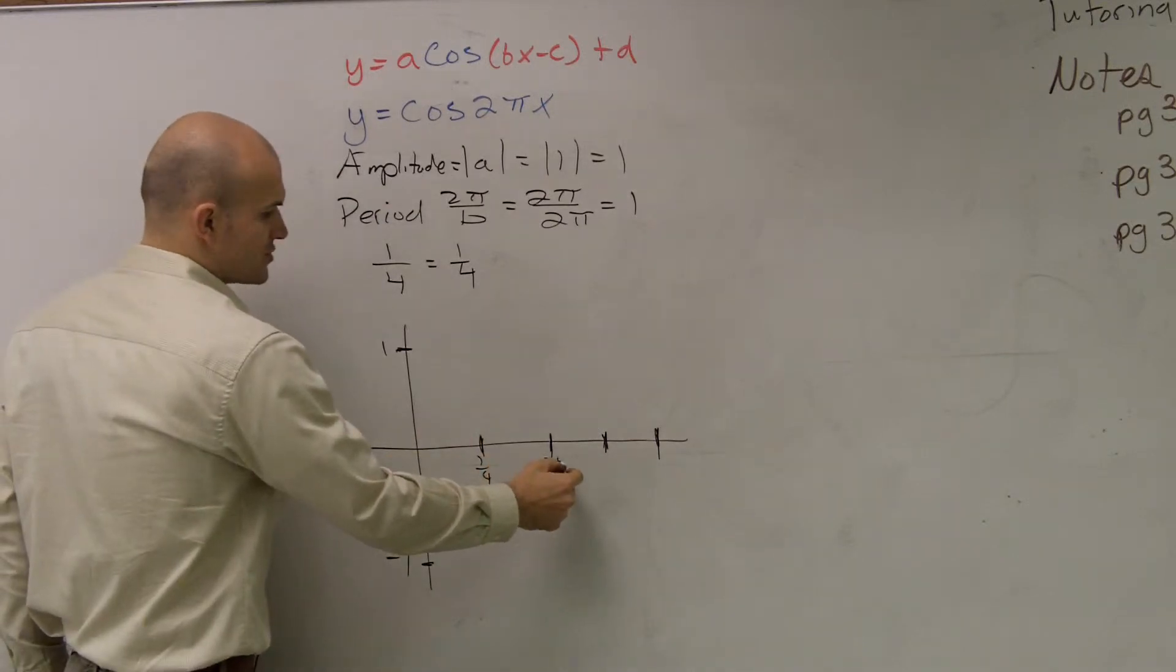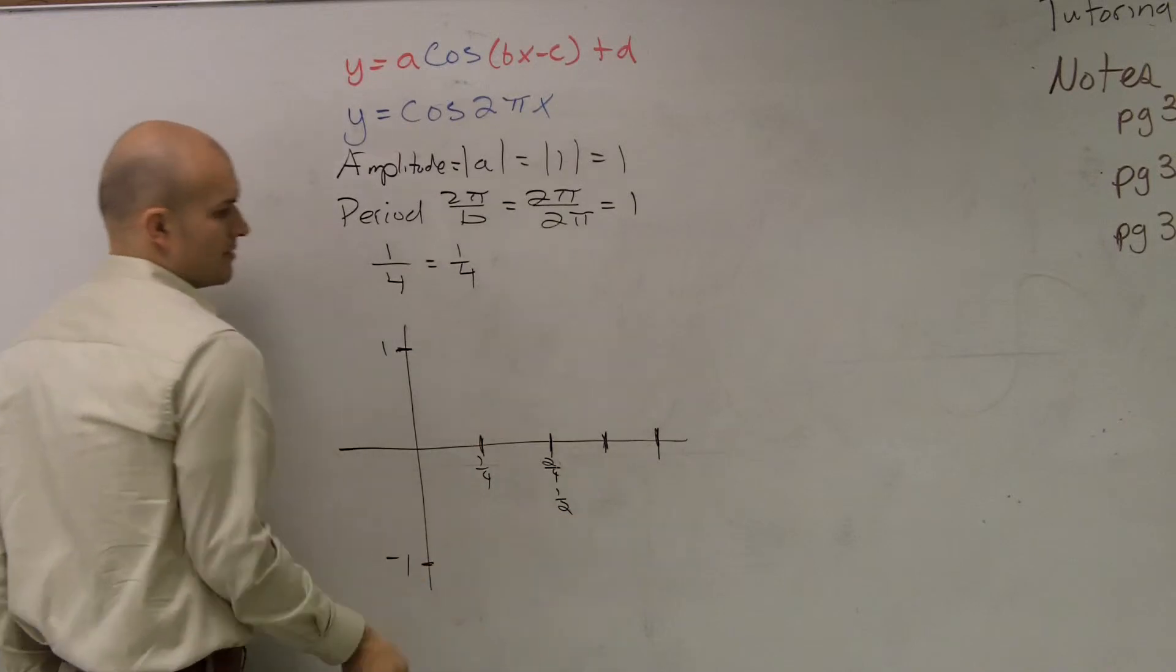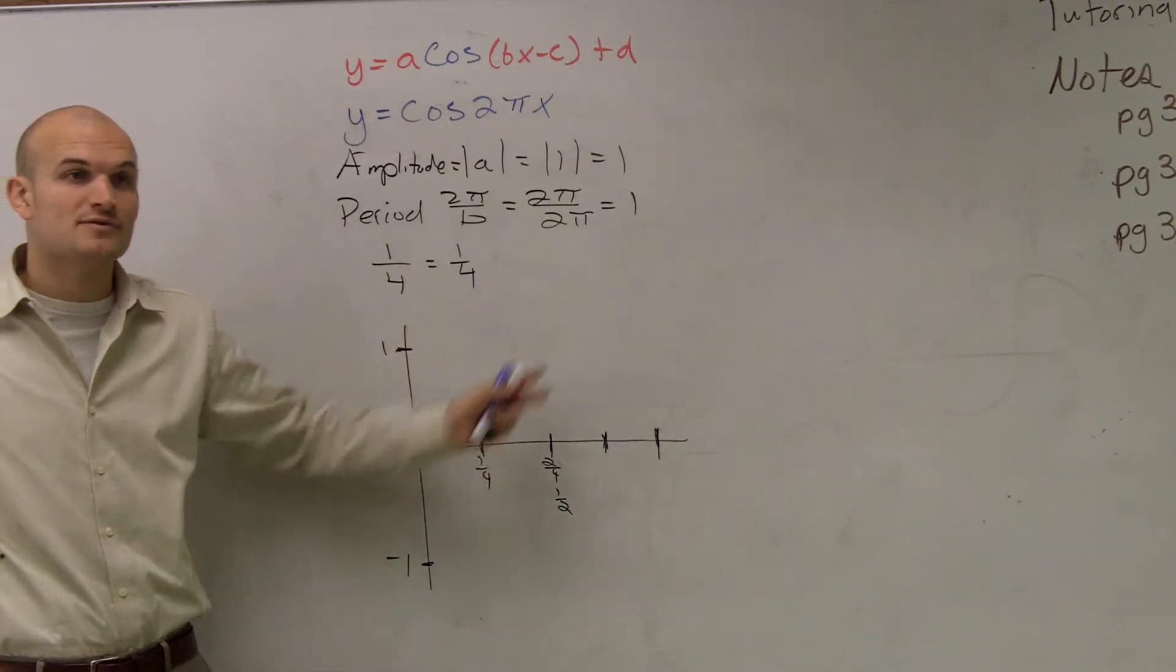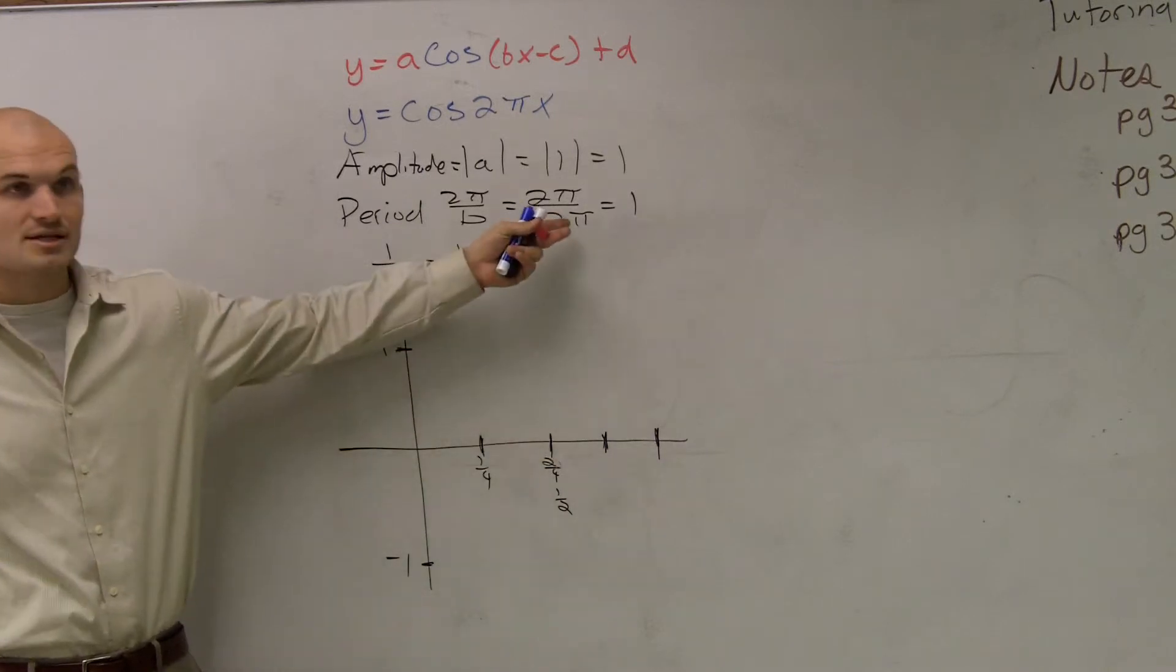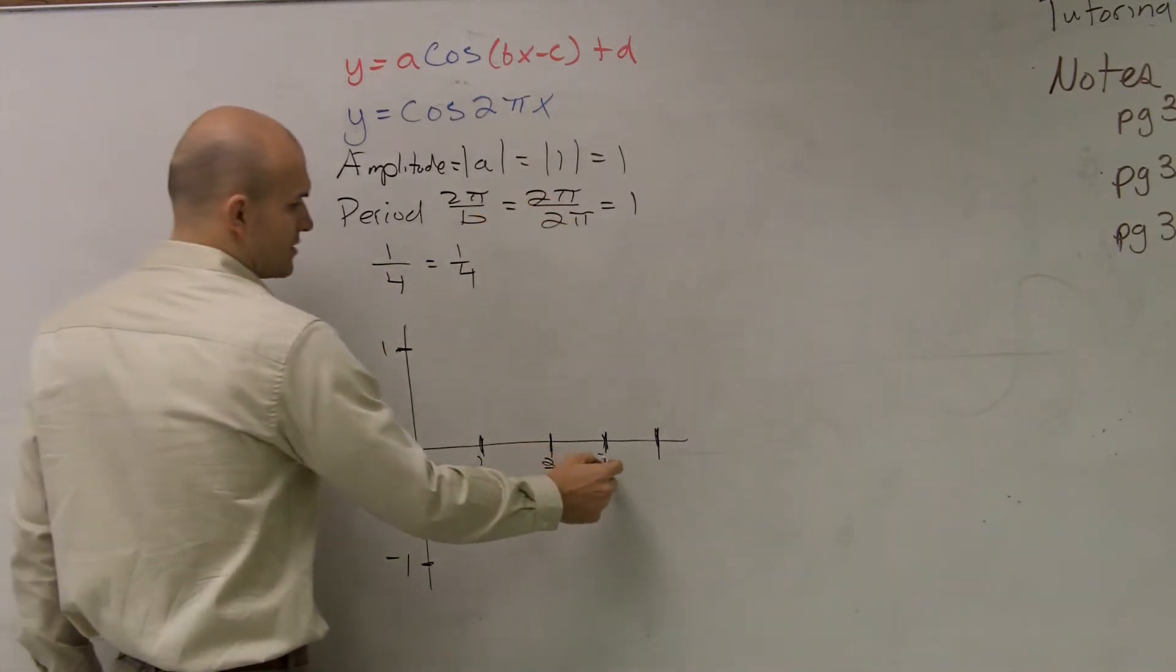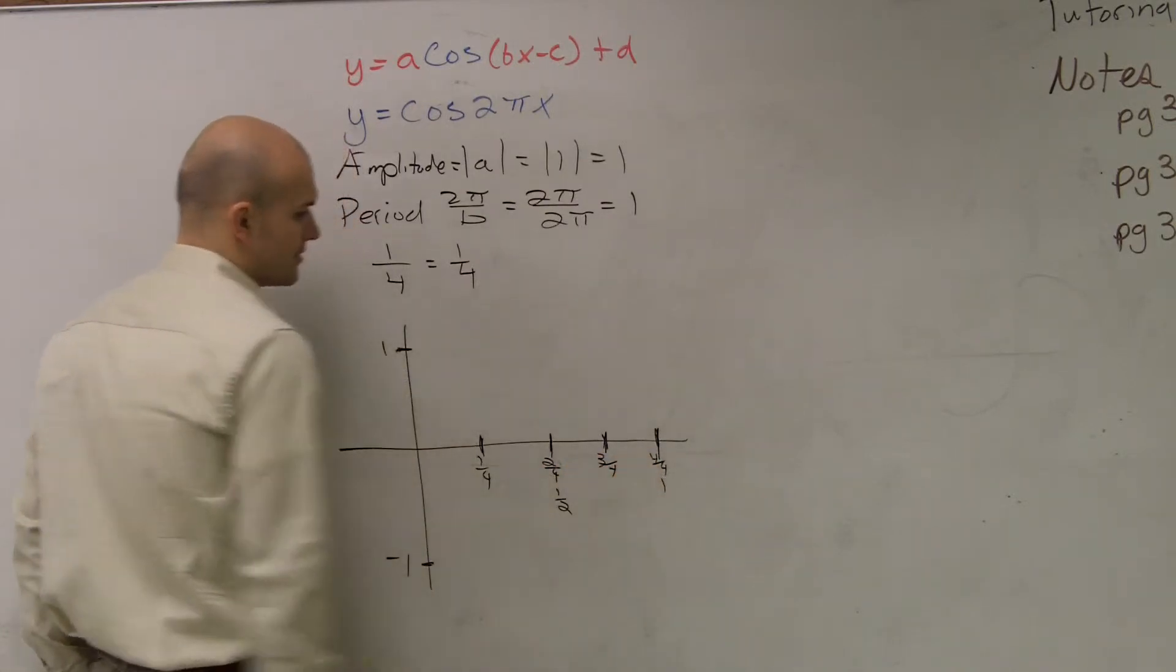1 fourth plus 1 fourth is 2 fourths, which is 1 half. And notice, guys, see how this one doesn't have pi? And that's okay. Sometimes you're going to have spacing that's going to deal with pi. Sometimes your pi's cancel out, so you're not dealing with pi. Next one plus another one is going to give you 3 fourths, and this will give you 4 fourths, which is 1.